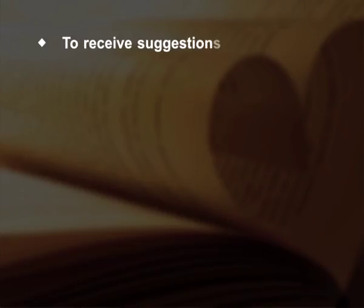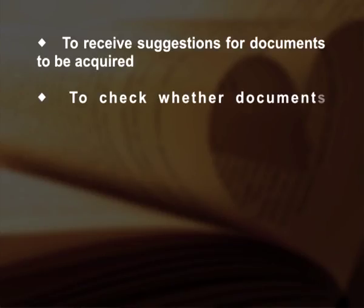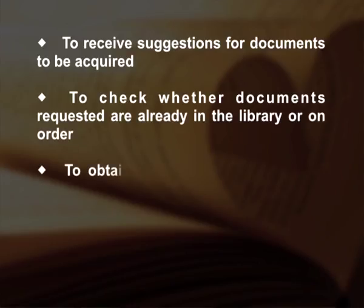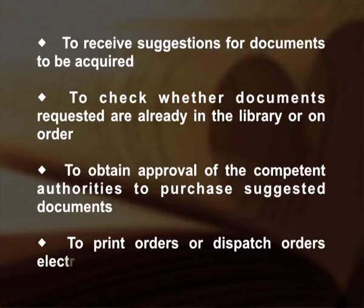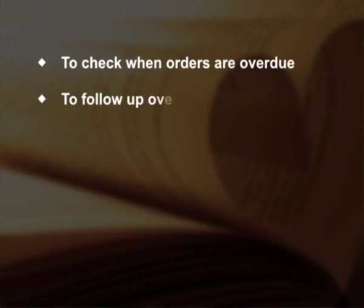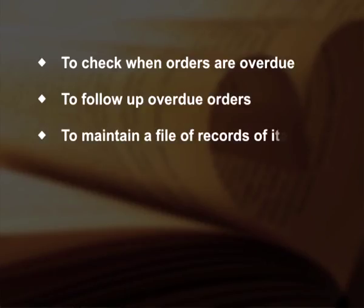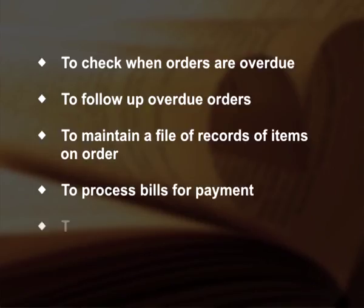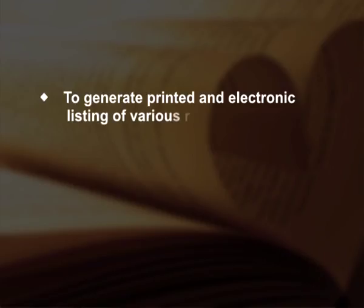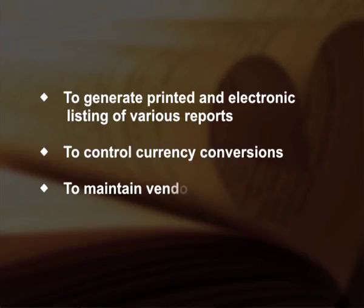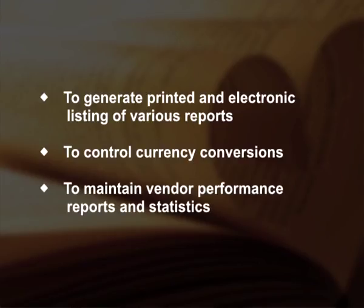The basic activities of an automated acquisition system are: to receive suggestions for documents to be acquired; to check whether documents requested are already in the library or on order; to obtain approval of competent authorities to purchase suggested documents; to print orders or dispatch orders electronically to suppliers or publishers; to check when orders are overdue; to follow up overdue orders; to maintain a file of records of items on order; to process bills for payment; to maintain document fund statistics and accounts; to generate printed and electronic listings of various reports; to control currency conversions; and to maintain vendor performance reports and statistics.